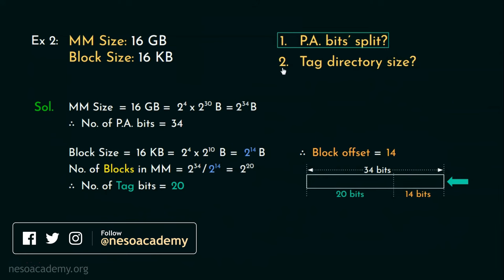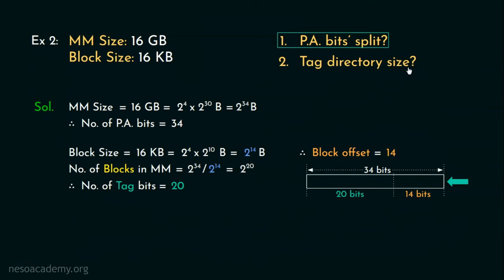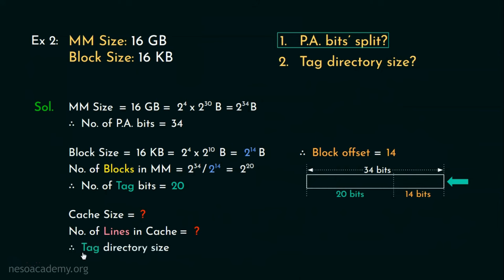Coming to the second part — finding the tag directory size — in the previous example we knew the cache size to determine how many lines are in the cache. However, in this problem statement the cache size is missing, so there is no way to find the number of lines inside the cache. Therefore, the tag directory size cannot be determined. Remember: the tag directory size can't be found if we don't know how many lines are in the cache or how many bits are used to store the tag information.